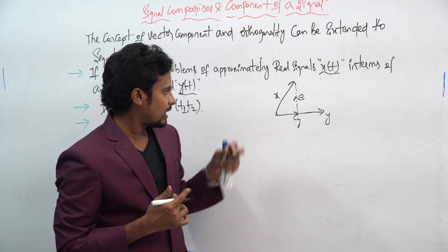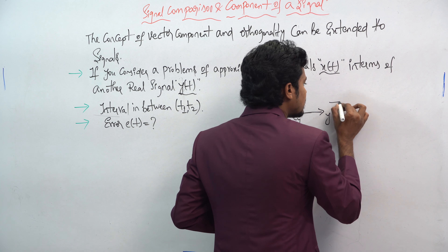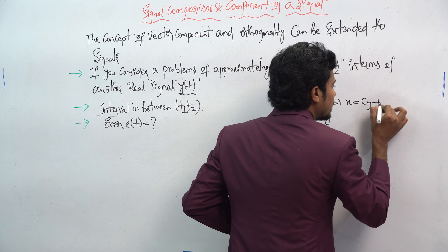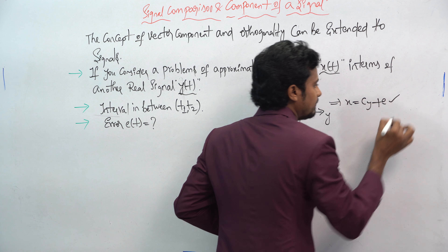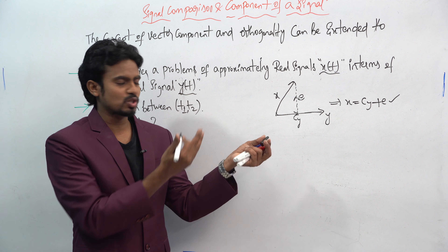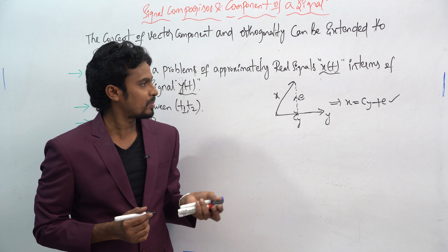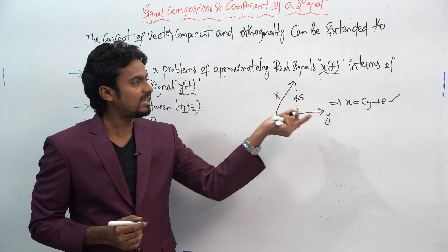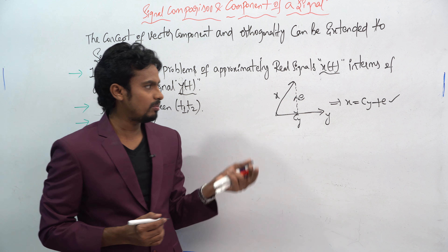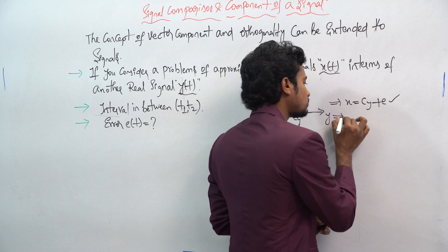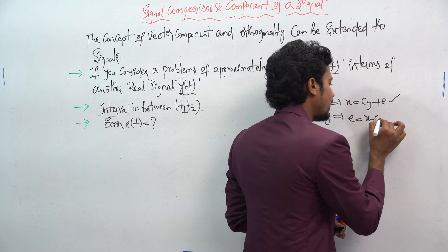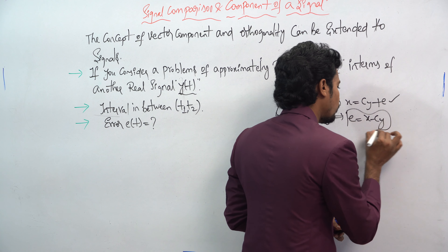How can we write x? x is equal to c·y plus e. In the previous class we saw all of those things. How you can write the error signal: e is equal to x minus c·y.